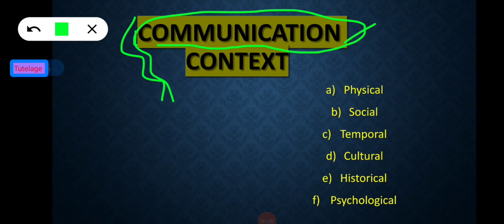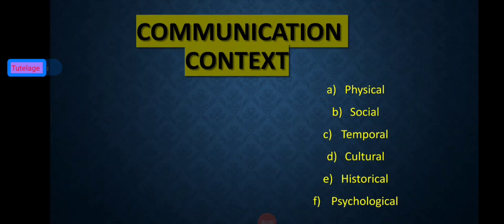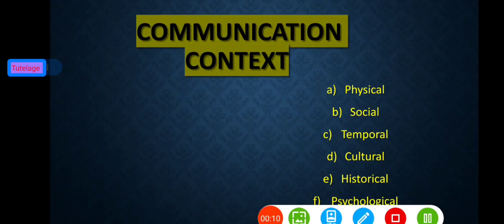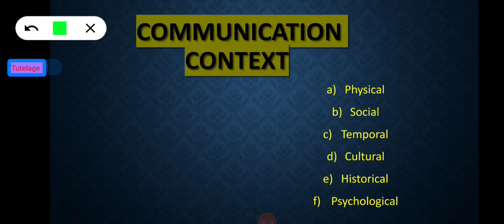If the receiver is able to understand the context, there is a high tendency for them to interpret the correct meaning of the message. But if they are unable to understand the context, it will lead to misinterpretation of the message. So context in communication is as important as the content. There are different dimensions of communication context.